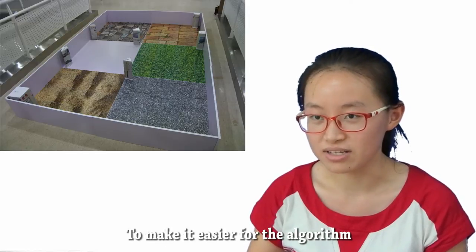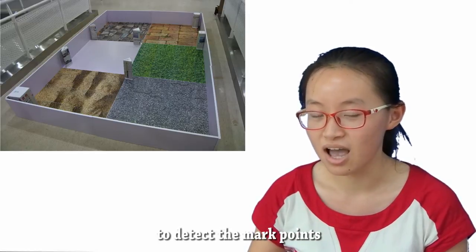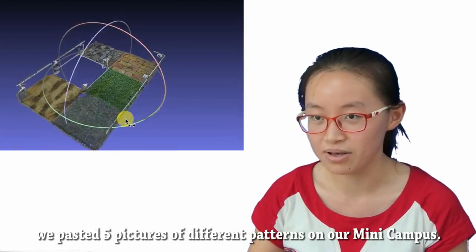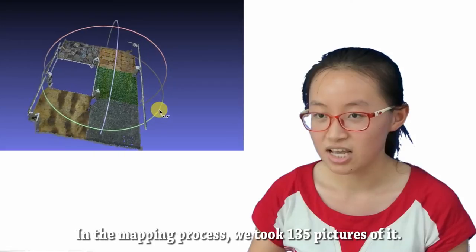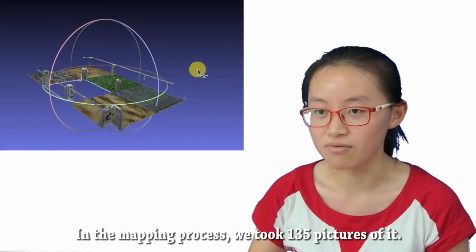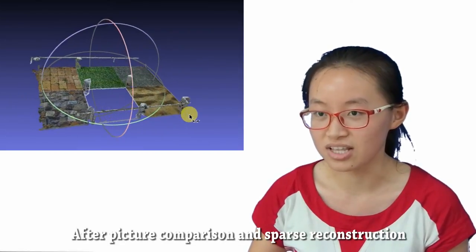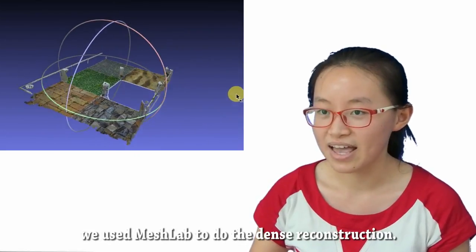To make it easier for the algorithm to detect the mark points, we pasted 5 pictures of different patterns on the mini-campus. In the mapping process, we took 135 pictures of it. After picture comparison and sparse reconstruction, we used the Mesh Lab to do the dense reconstruction.